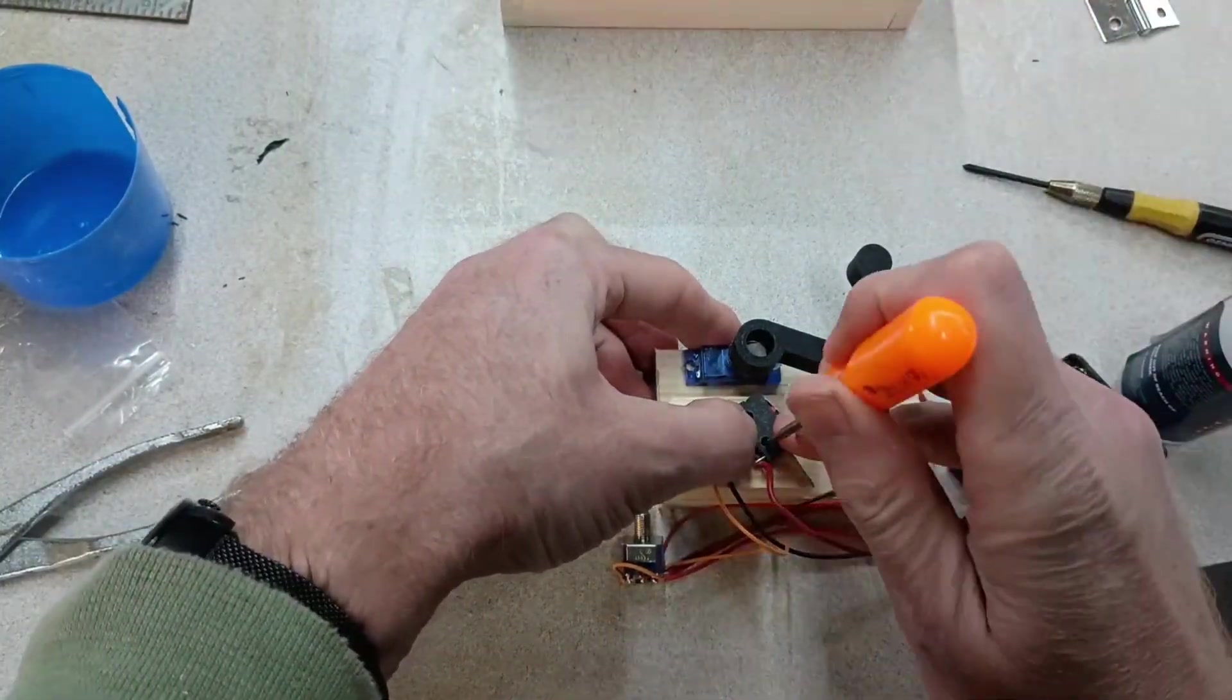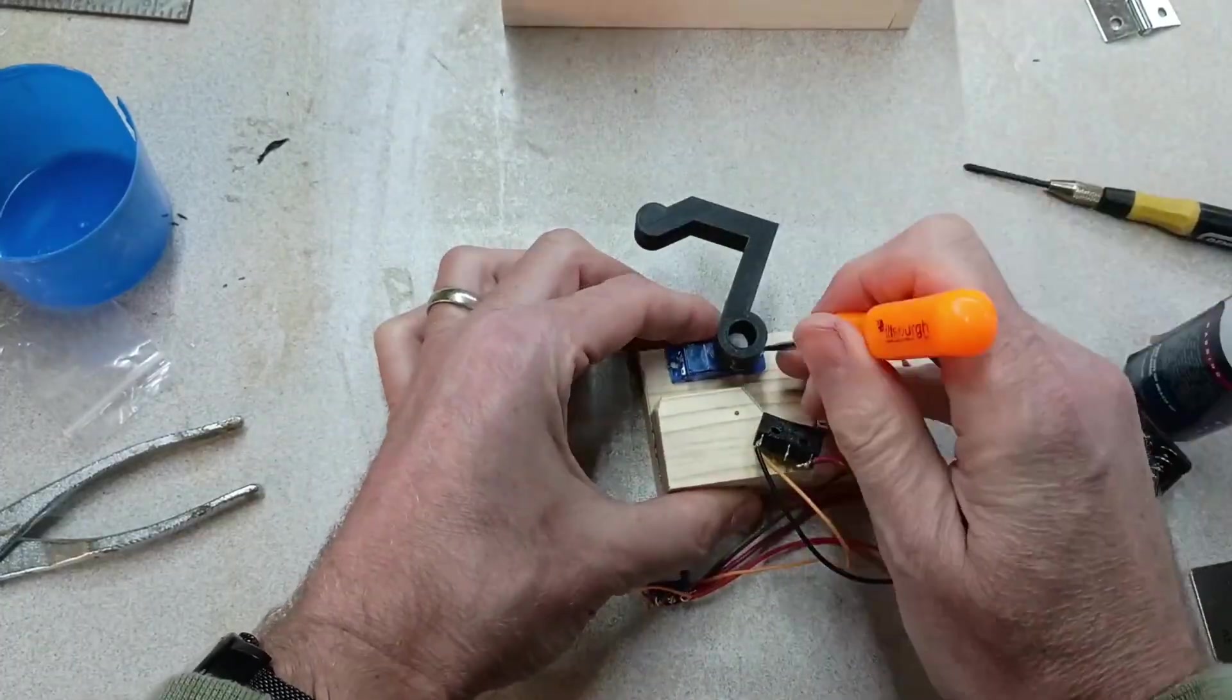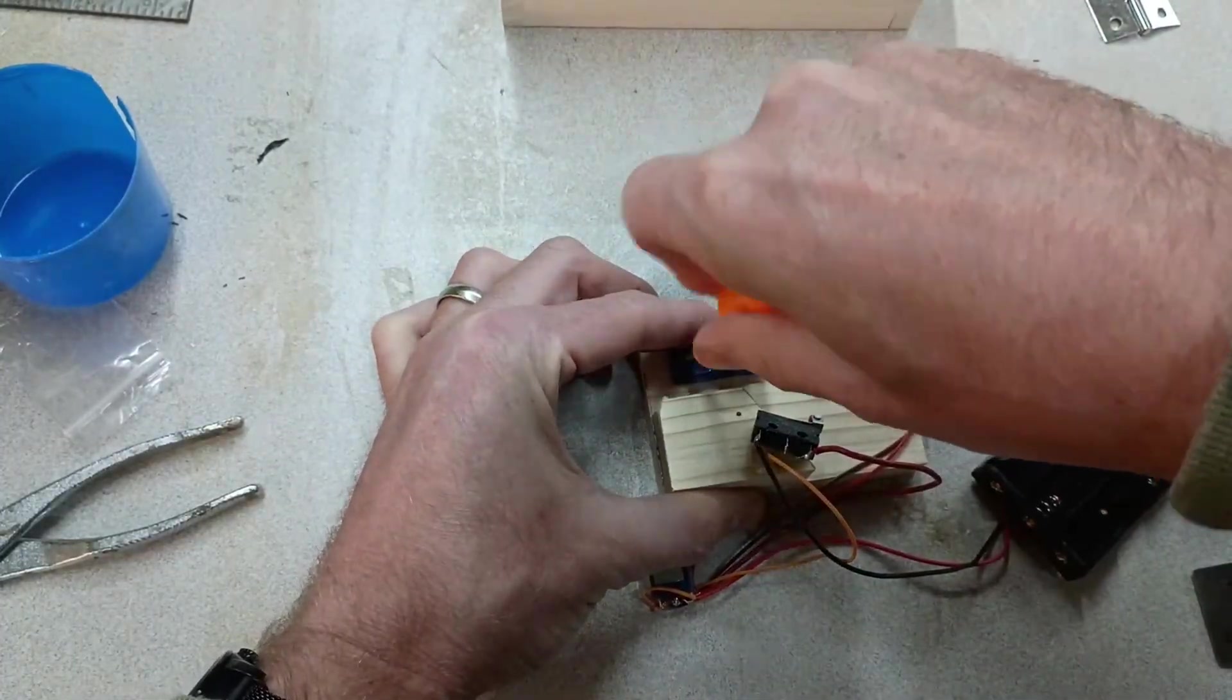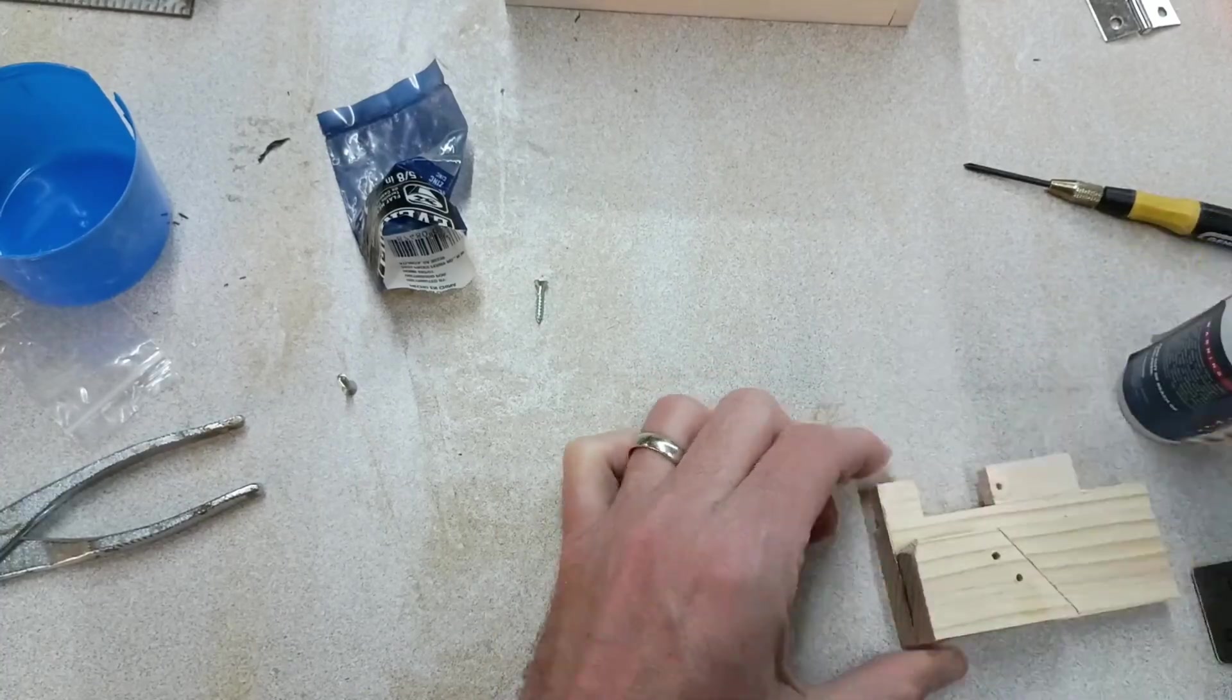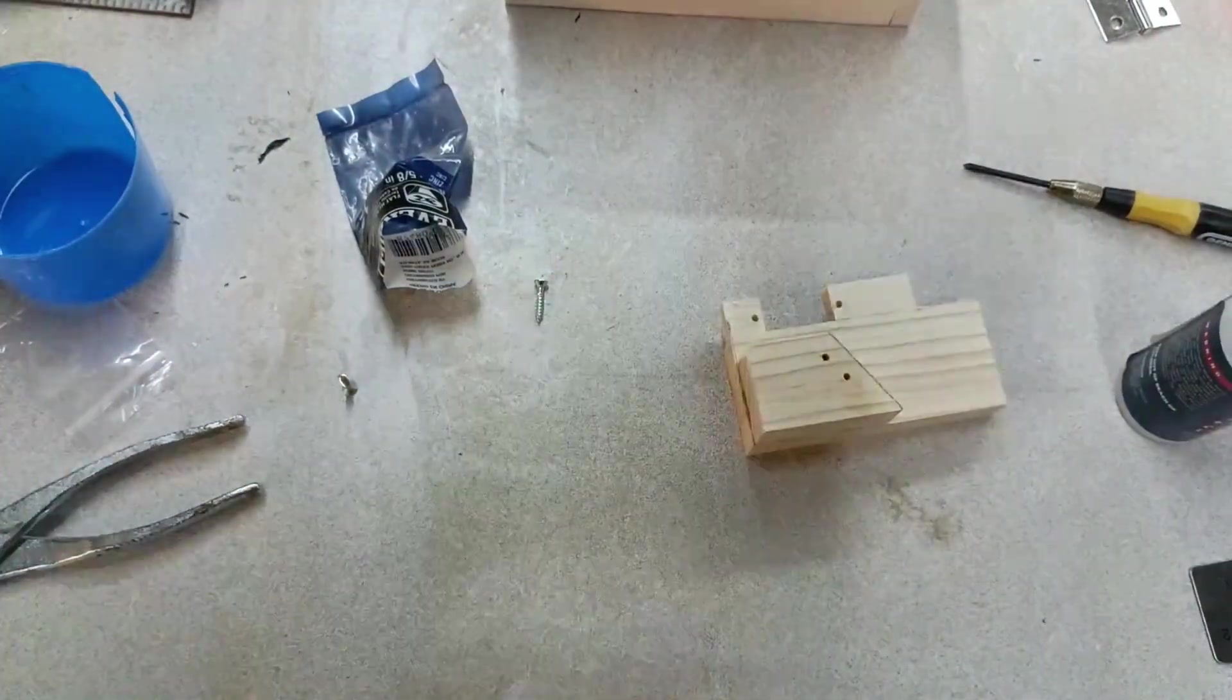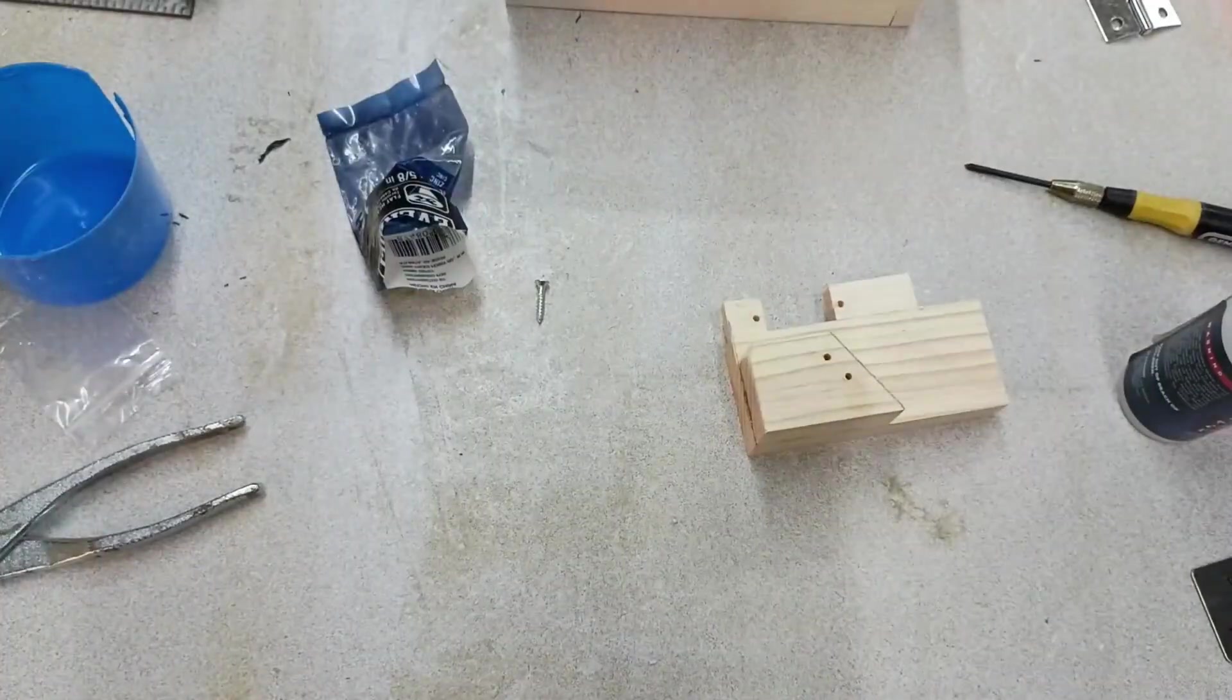And it's mounted so when the black finger piece comes back, it hits the rocker switch and cuts the power. Again, just mounting the servo and the limit switch onto the block here.